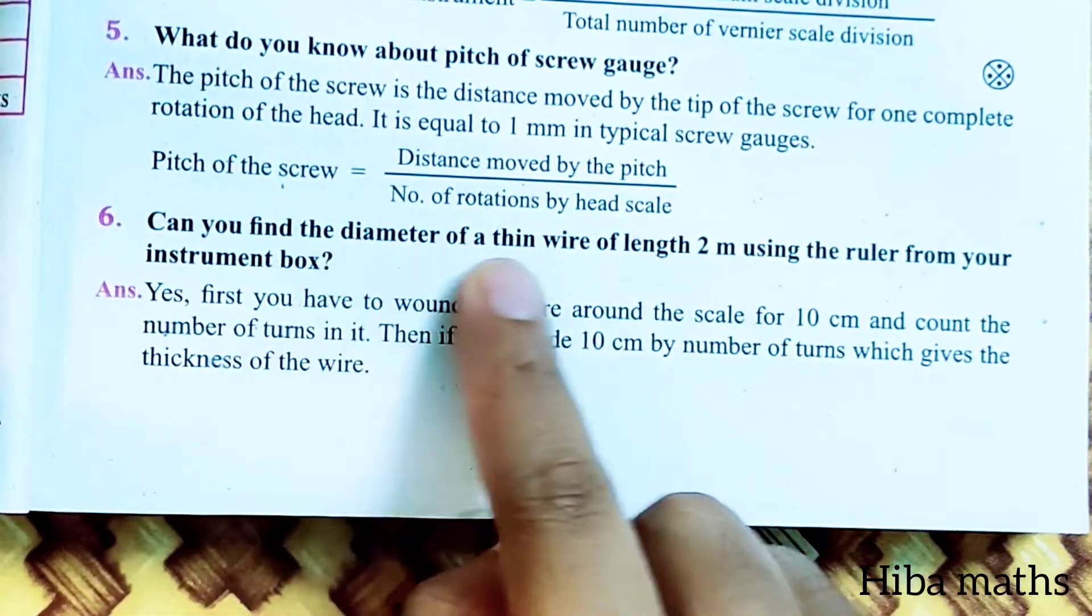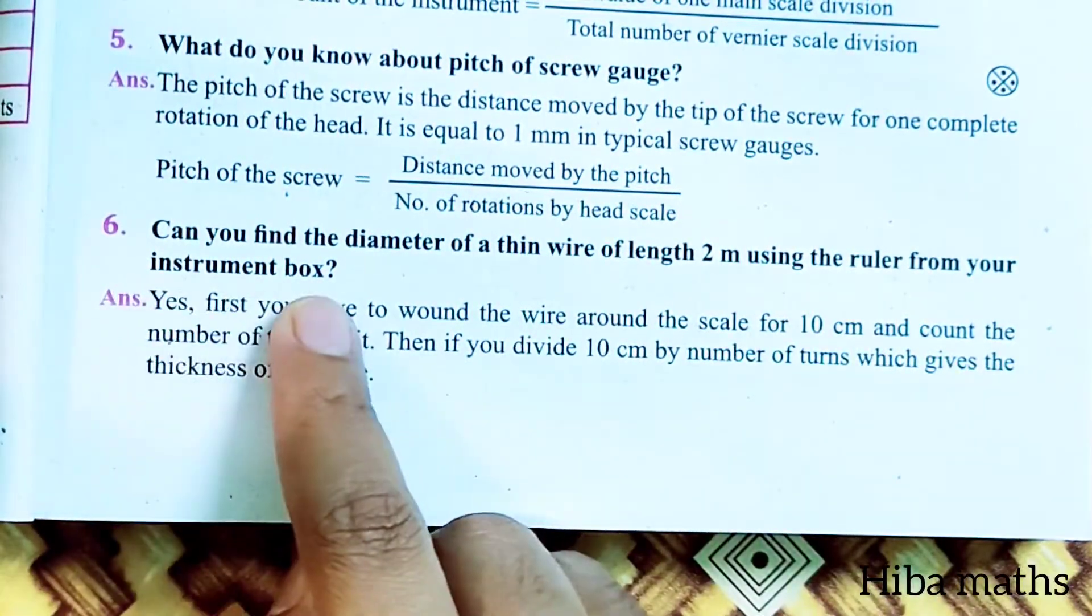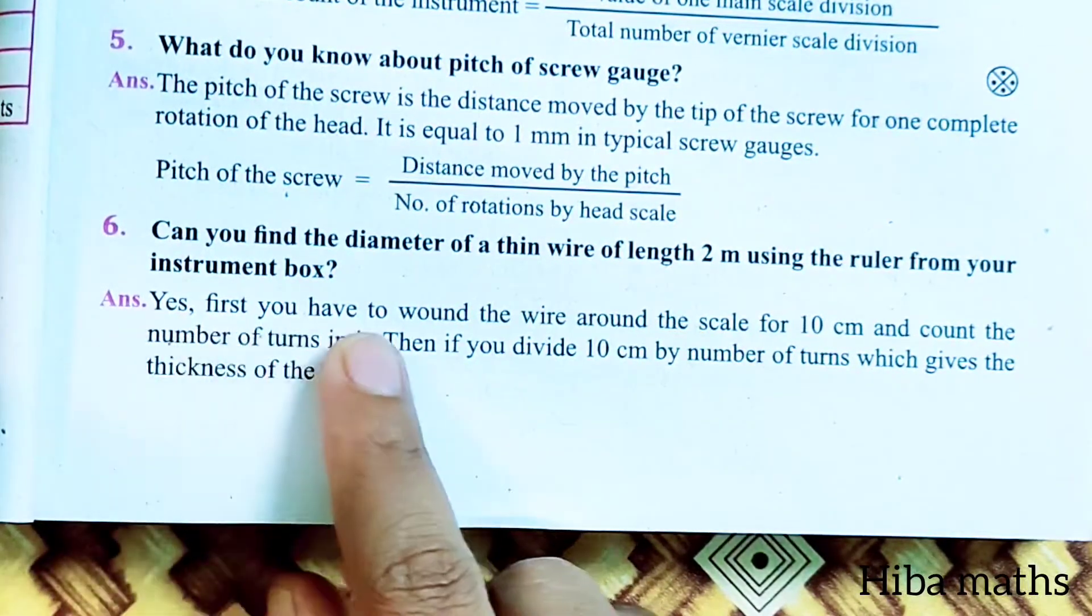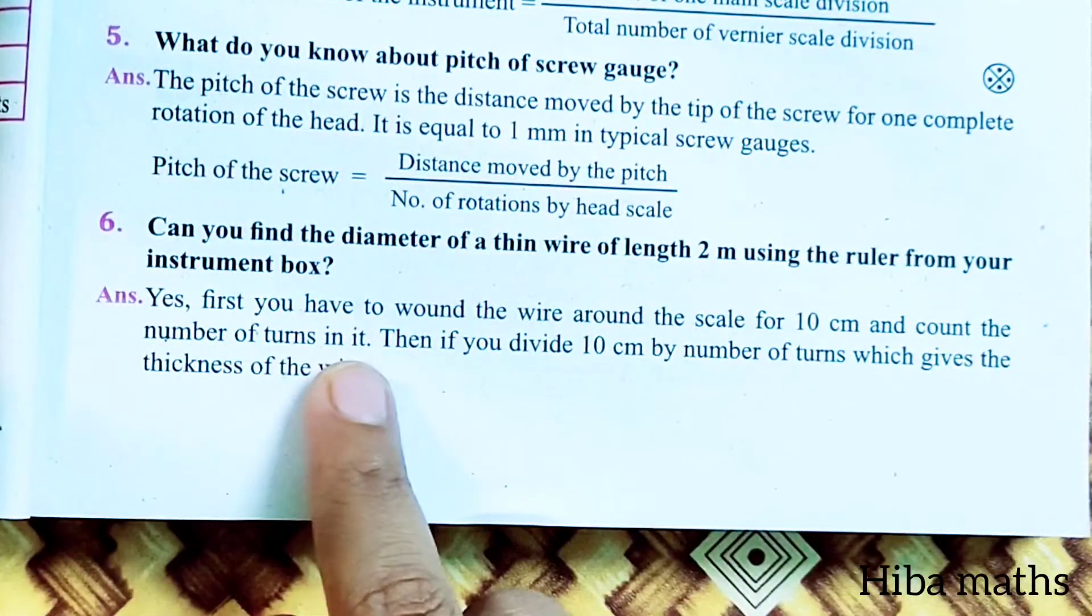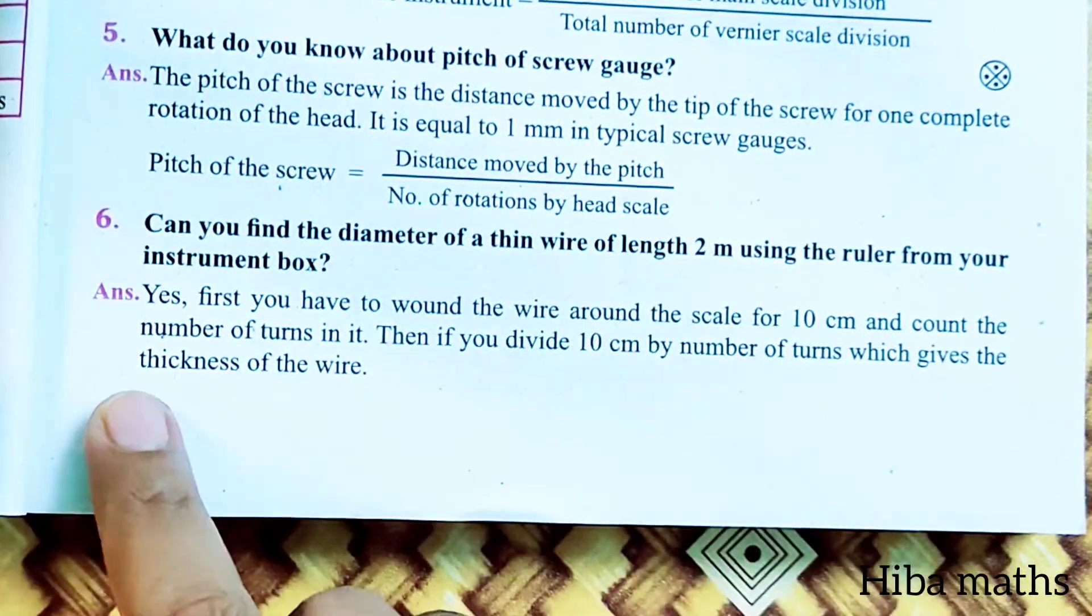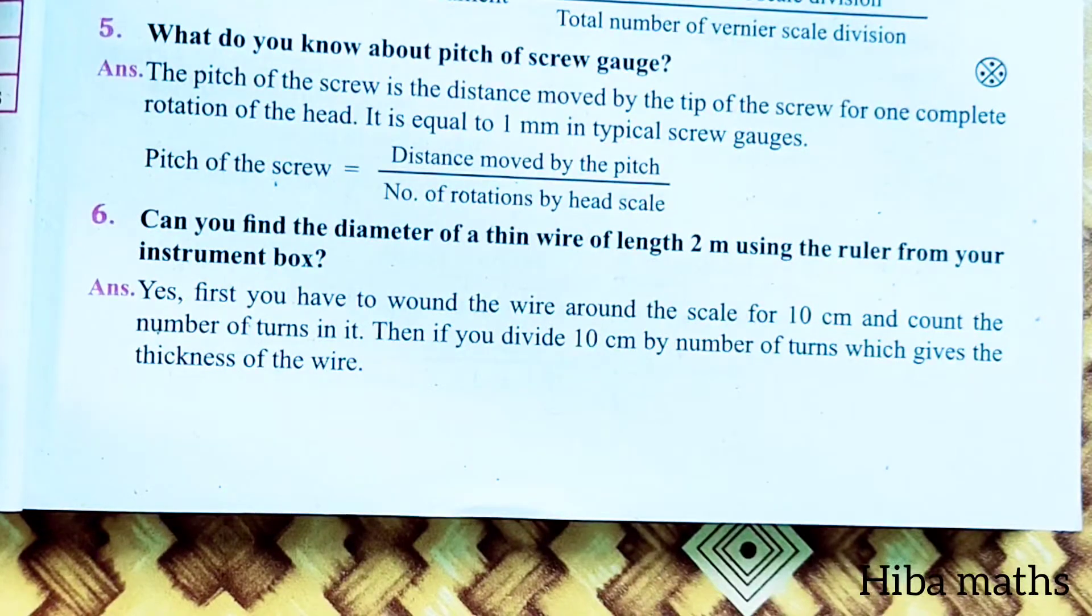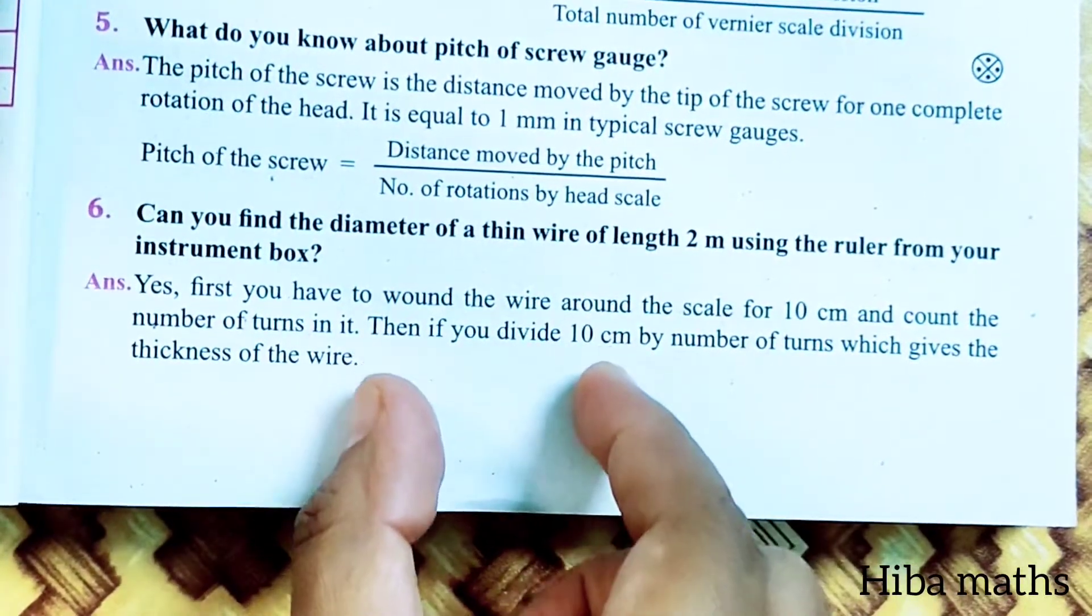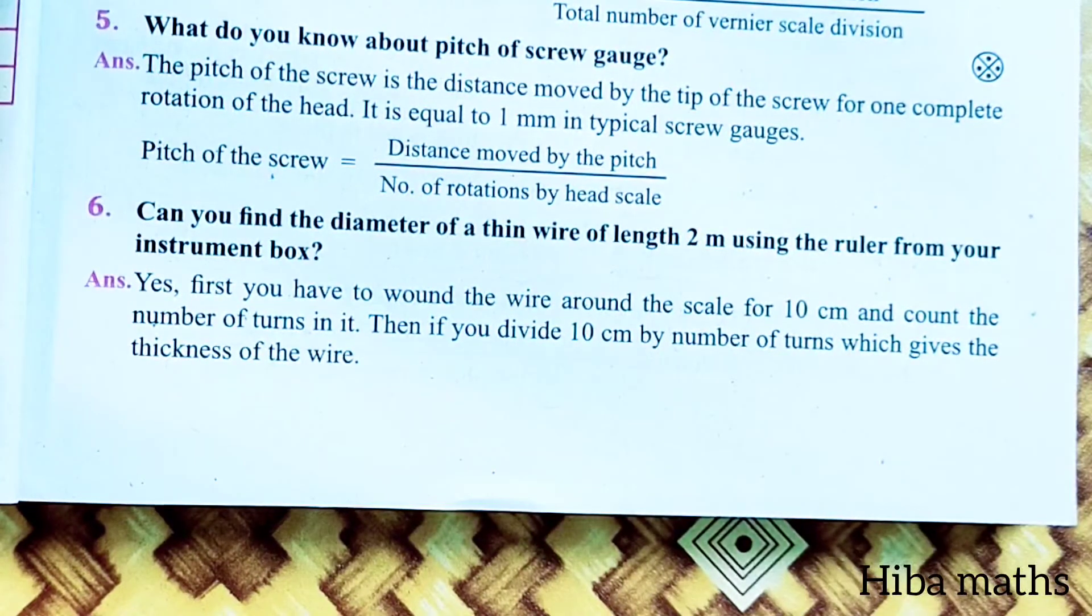Can you find the diameter of a thin wire of length 2 meter using the ruler from your instrument box? Our normal scale is 15 cm scale. Yes, first you have to wound the wire around the scale for 10 cm and count the number of turns in it. Then if you divide 10 cm by the number of turns, which gives the thickness of the wire. So what I am saying is we have a scale, we have a wire. Wind this wire for 10 cm and count the number of turns. If you divide 10 cm by the number of turns, it gives the thickness of the wire.